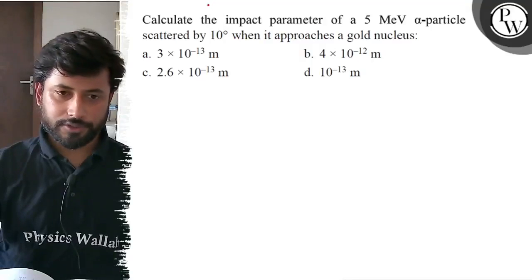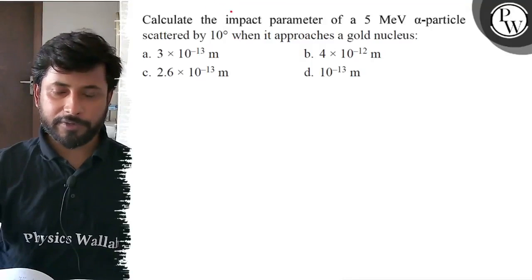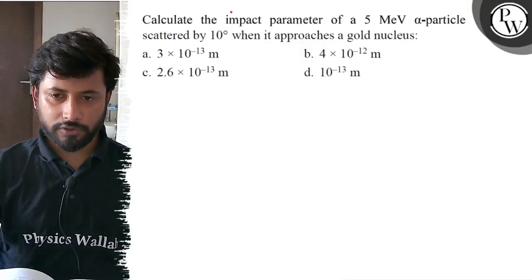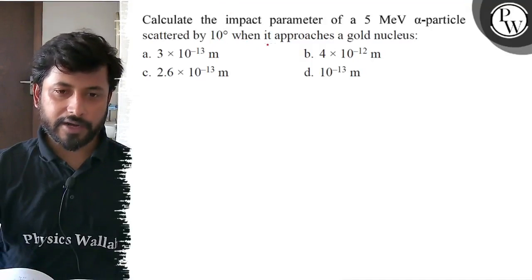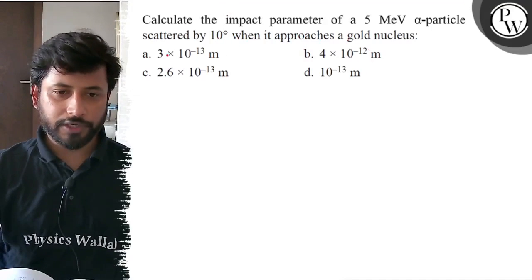Hello students, let us see this question. Calculate the impact parameter of a 5 mega electron volt alpha particle scattered by 10 degrees when it approaches a gold nucleus.